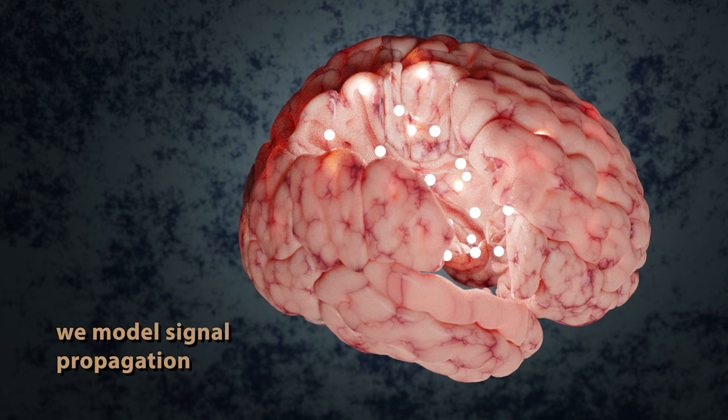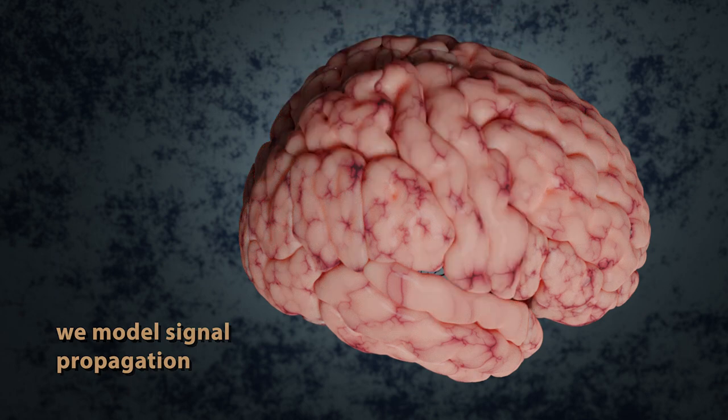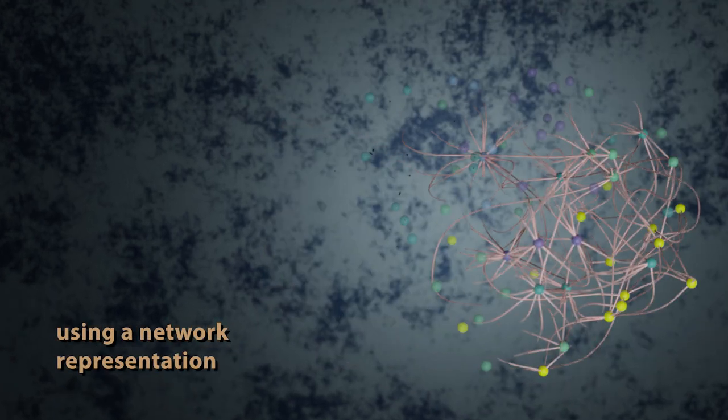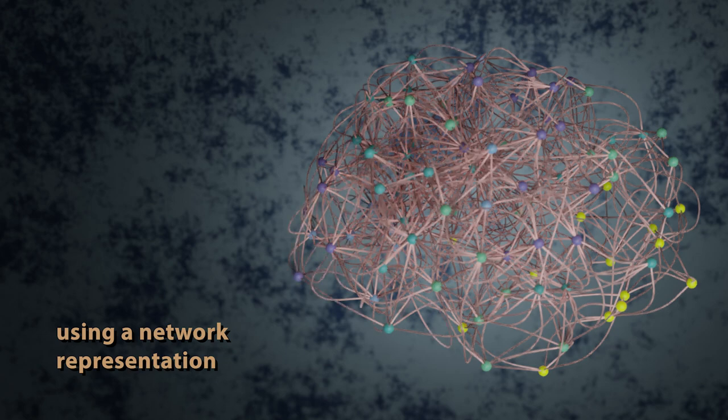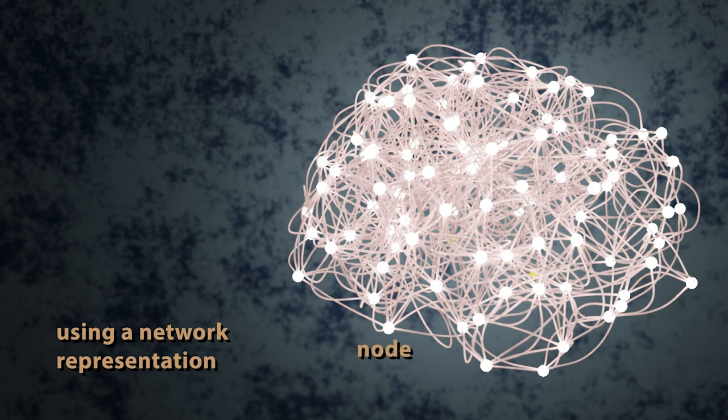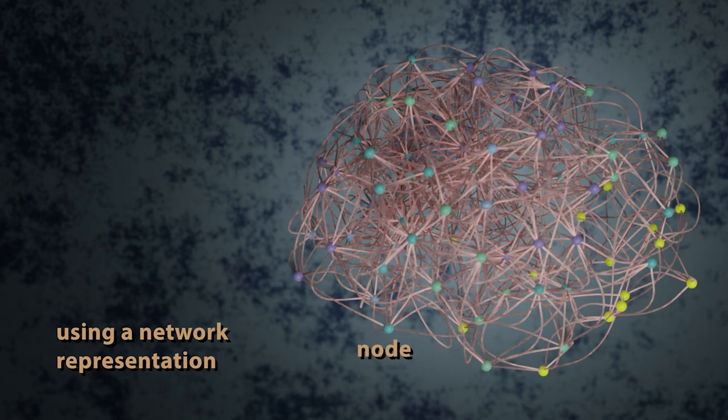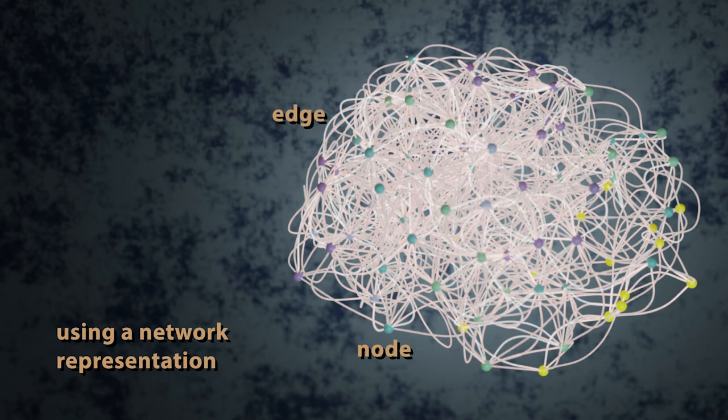To achieve this, we utilize a model of signal propagation in the brain that relies on a network representation. In this network, cortical regions are represented as nodes, and the structural connections between those nodes are represented as edges.